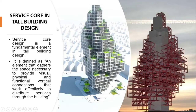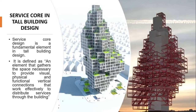Service core in tall building design — from the outside a building looks like a solid structure, but it has a service core which is the most fundamental element in tall building design. We first design a core — this gray structure — which starts right from the bottom and goes through to the top of the building. Then we have the red structure which is the tenant space surrounding this service core. The service core is defined as an element that gathers the space necessary to provide visual, physical and functional vertical connections that work effectively to distribute services throughout the building.